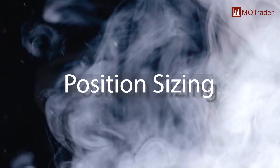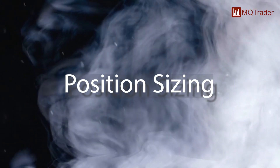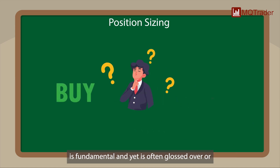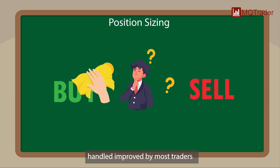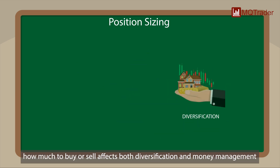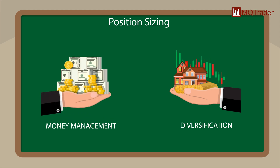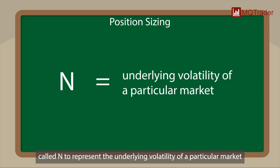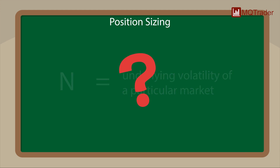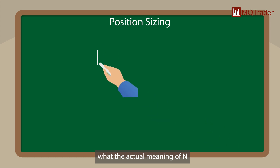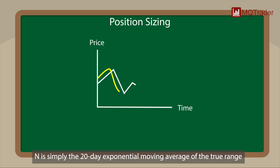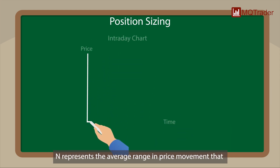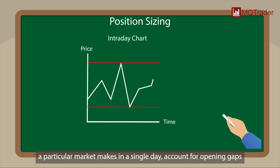Position sizing — the decision about how much to buy or sell — is fundamental and yet is often glossed over or handled improperly by most traders. The turtles used a concept that Richard Dennis and William Eckhart called N to represent the underlying volatility of a particular market. N is simply the 20-day exponential moving average of the true range, now more commonly known as the ATR. N represents the average daily price movement in a particular market.